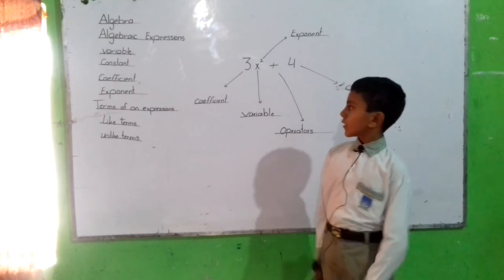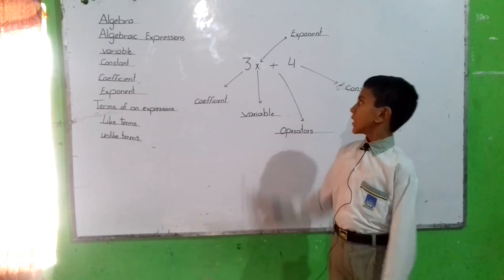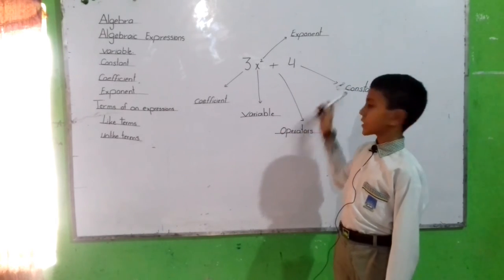Constant. The number without variable is called constant. In this expression, 4 is constant.